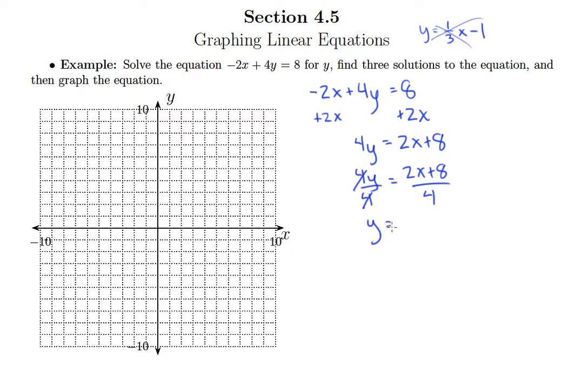You can always just take this 4 and put it underneath of each of the terms individually, and then you can reduce. 2 fourths is 1 half, so this becomes y equals 1 half x plus 2.